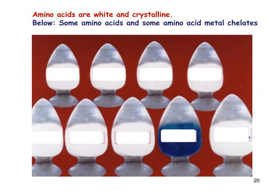Amino acids are white crystalline solids. Sometimes they are sold as chelate metal complexes of amino acids to make them more soluble — we will see an example of that with copper shortly. The blue-coloured substance shown here is not a pure amino acid but a metal chelate of an amino acid. Pure amino acids are white and crystalline in appearance.